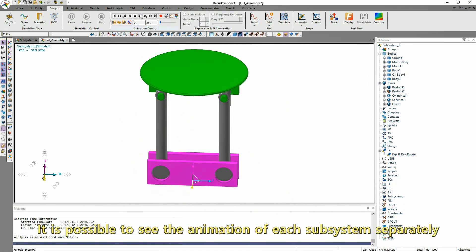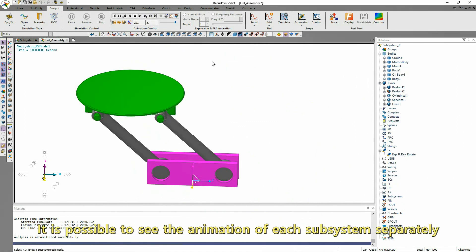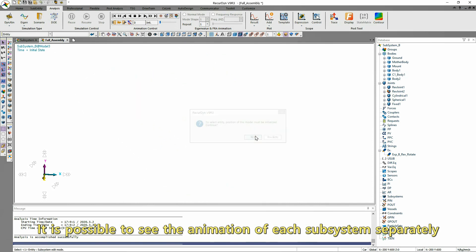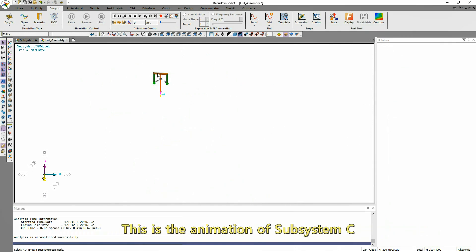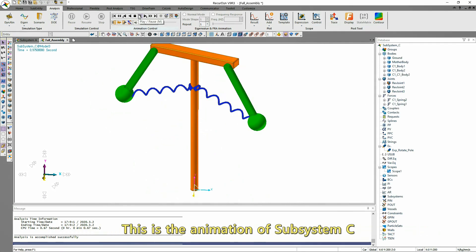This is the simulation result of the entire system. It is possible to see the animation of each subsystem separately. This is the animation of subsystem C, for example.